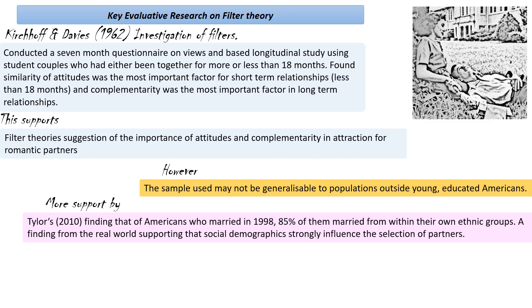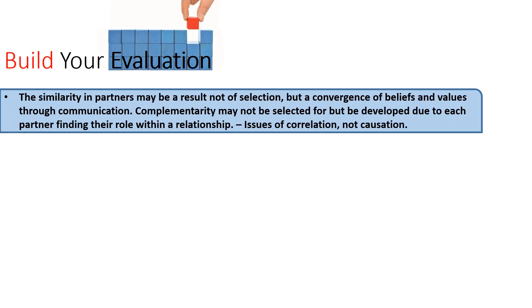We could criticise this explanation by saying that the similarity in partners might not actually be a result of selection. It might be that when people are together for a long time, there's a convergence of beliefs and values through conversation. Also, the complementarity factor might not be selected for before the relationship, but rather during the relationship each partner finds their role. So we could be looking at an issue of correlation, not causation.